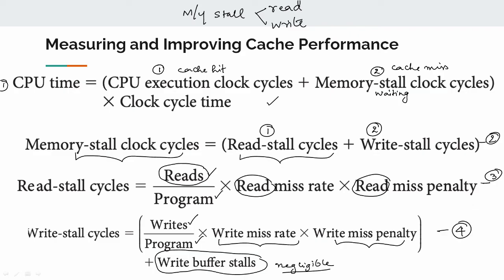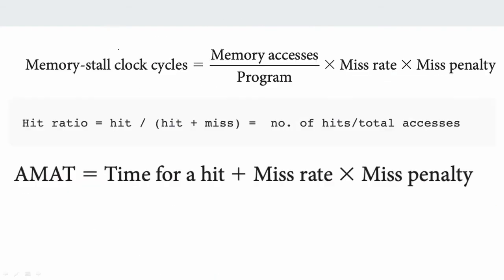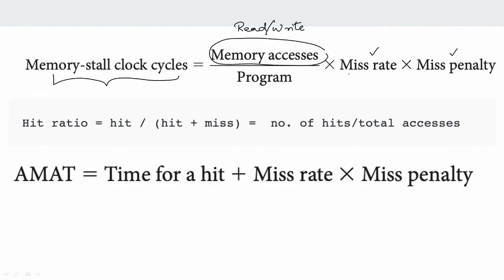So if we use equation 3 and 4 together, for memory stall clock cycles we use memory accesses — read or write — divided by overall program length, into miss rate and miss penalty. So overall miss rate and miss penalty gives us the final equation. The next step is hit ratio — number of hits divided by hits plus misses.